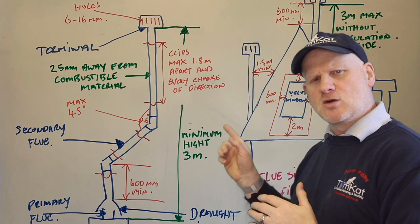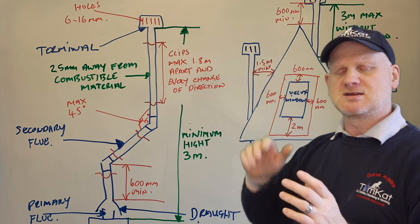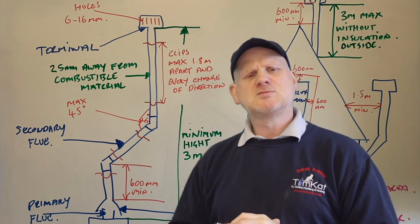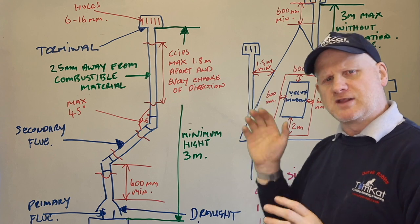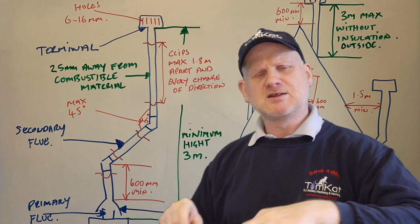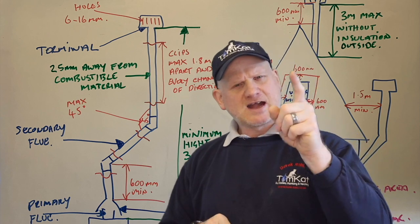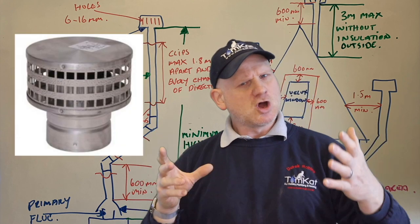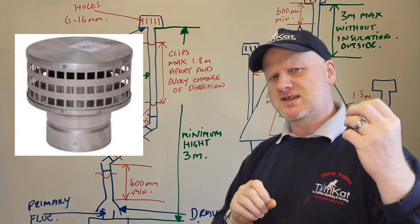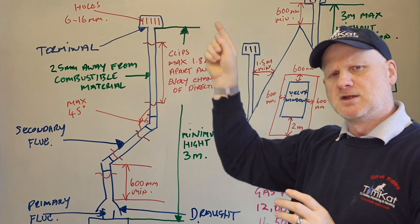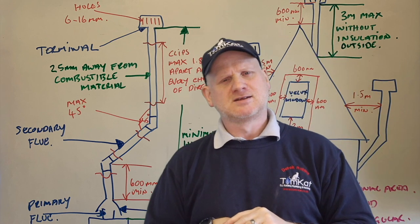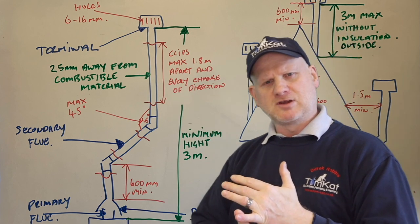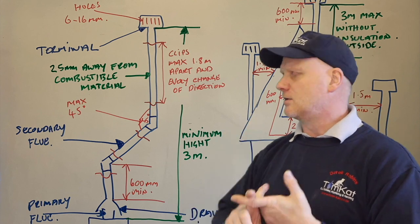The minimum height for an open flued appliance is 3 metres; the maximum height is per manufacturer's instructions. That's basically the secondary flue. Then attached to the secondary flue at the top is the terminal. The slots or holes in the terminal must allow the passing of a 6mm ball but not a 16mm ball. So the major components of this open flued boiler are: the primary flue, the draft diverter, the secondary flue, and the terminal.